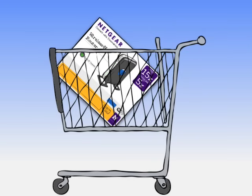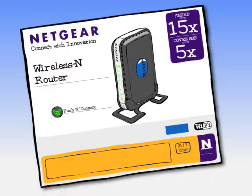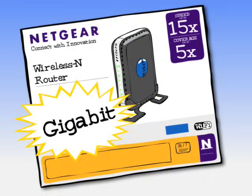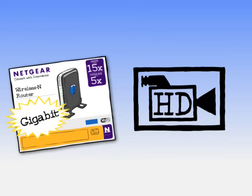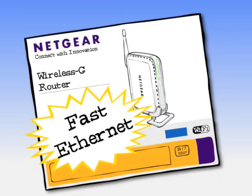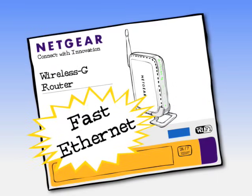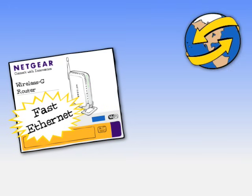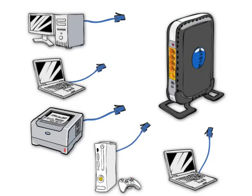Wireless routers still have those four ports built into them, so you can use wires with them too. When you're buying a router for use in a wired network, pay attention to the speed of the built-in switch. The fastest switches are called Gigabit, and they're perfect for applications like streaming video in your home. Meanwhile, routers with switches called Fast Ethernet are great for essential tasks like web surfing, email, and online gaming.